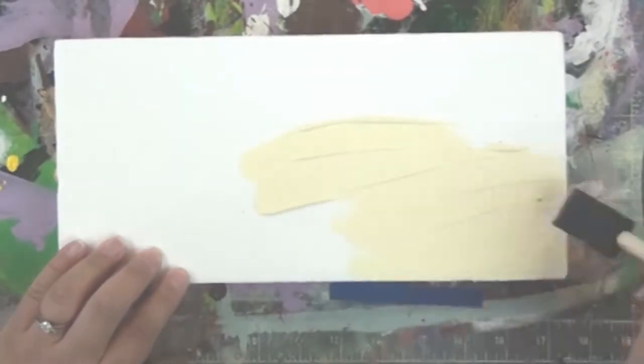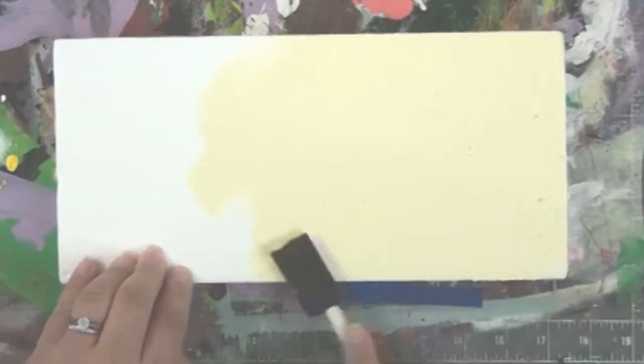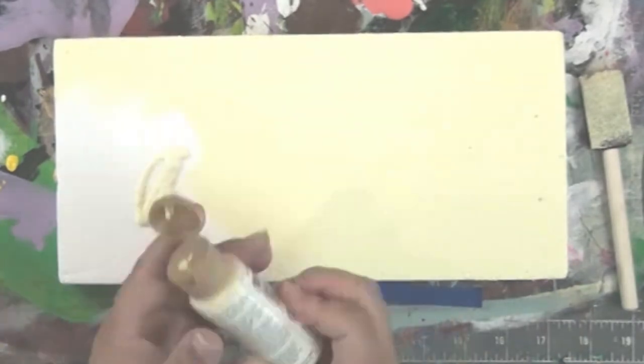This is a really easy, fun project to do. You need a 6x12 piece of smooth foam. What I'm doing here is coating it with some acrylic paint, and this is going to act like my gesso to pre-treat the foam.